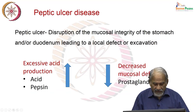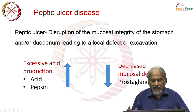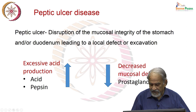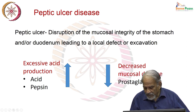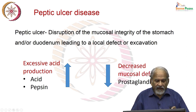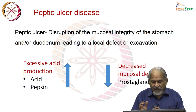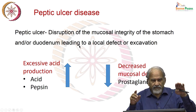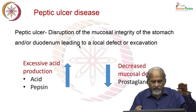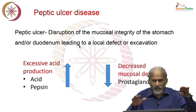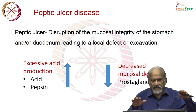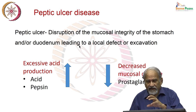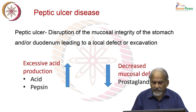In peptic ulcer disease, there is an imbalance between excessive production of acid and pepsin on one hand, and a decrease in mucosal defense on the other. The mucosal production and prostaglandin — which serve as a defense mechanism — go low, while acid production goes high. This imbalance leads to an attack on the mucous membrane and thereby the formation of an ulcer.